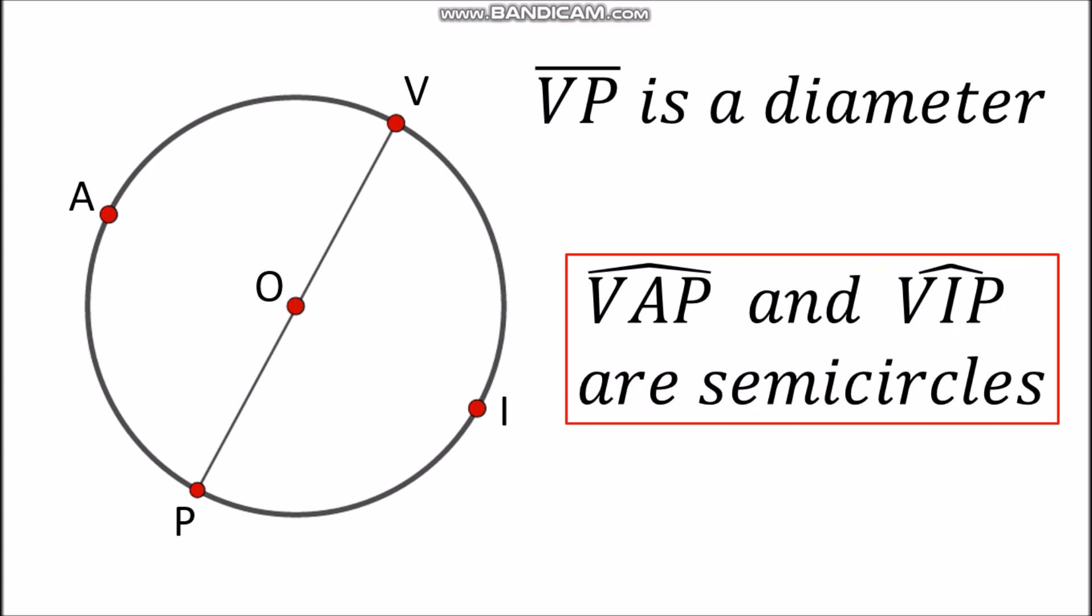So in this case, we have arc VAP and arc VIP, which are our semicircles. And if you will notice, the endpoints of the semicircles are the endpoints of your diameter as well.